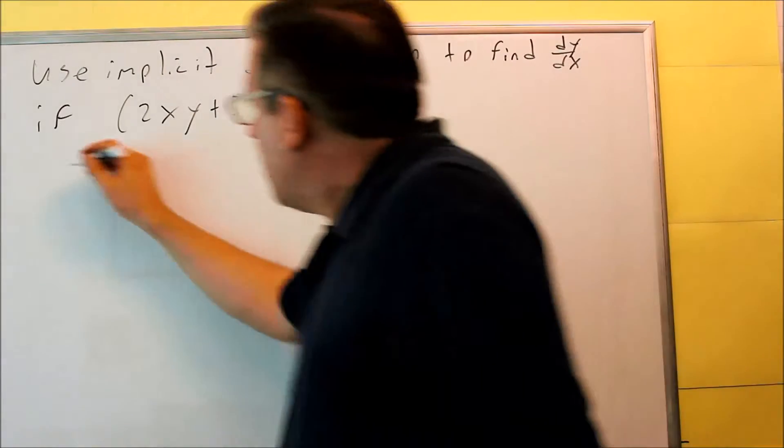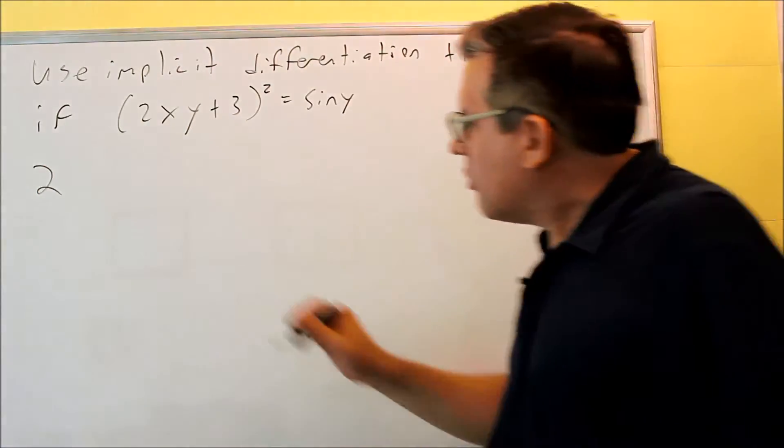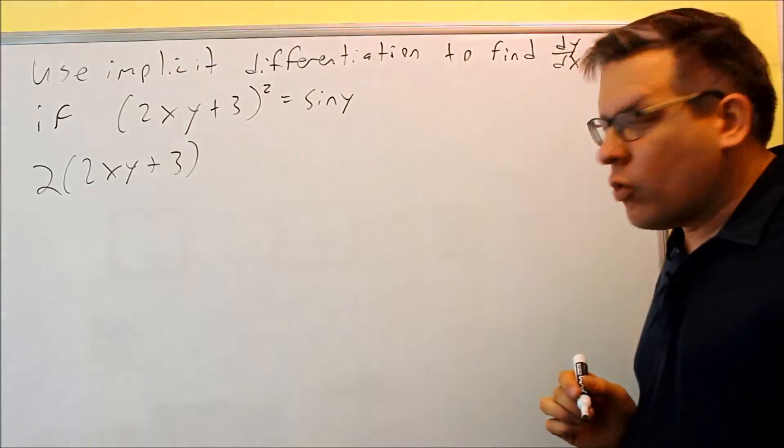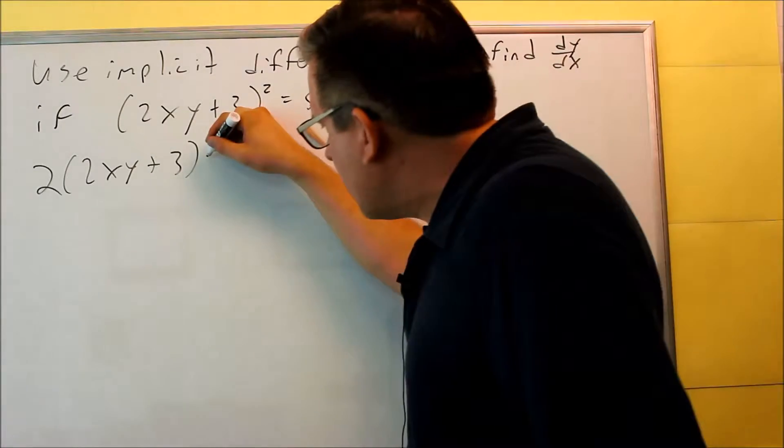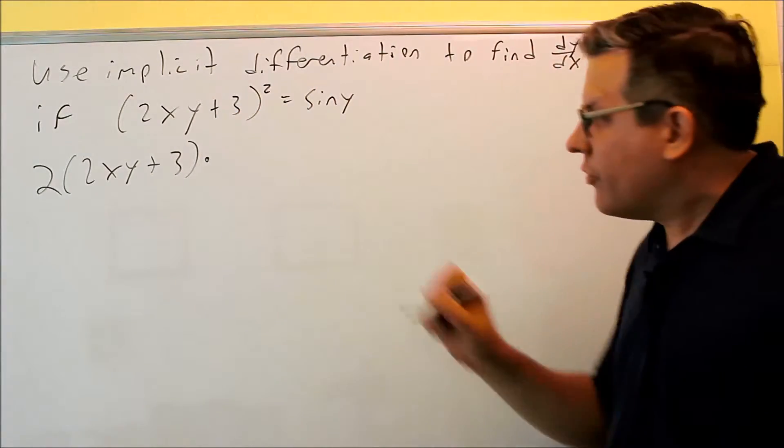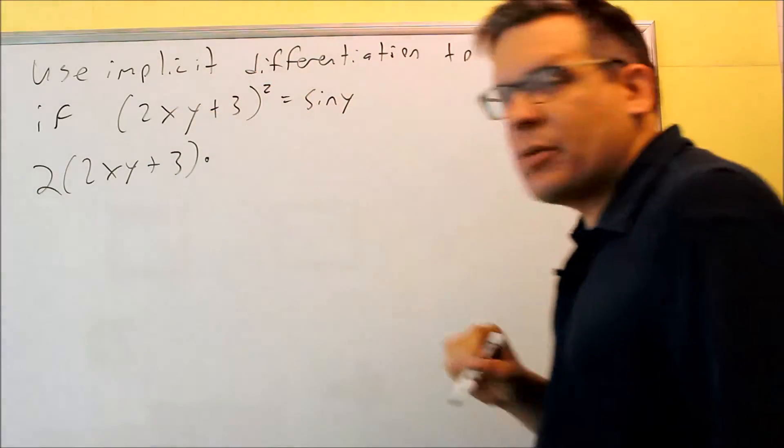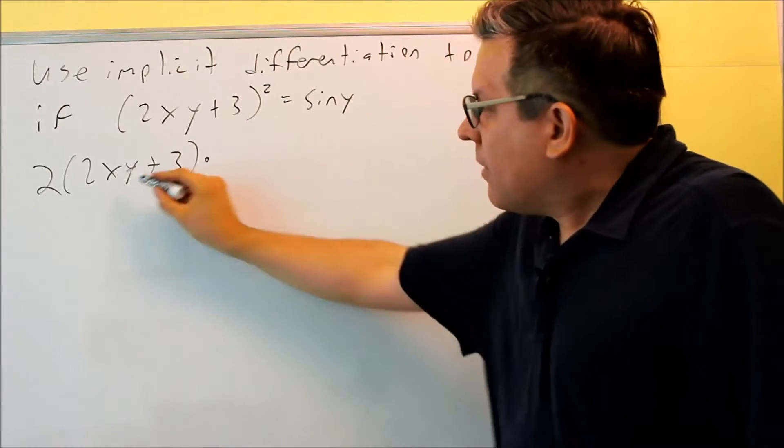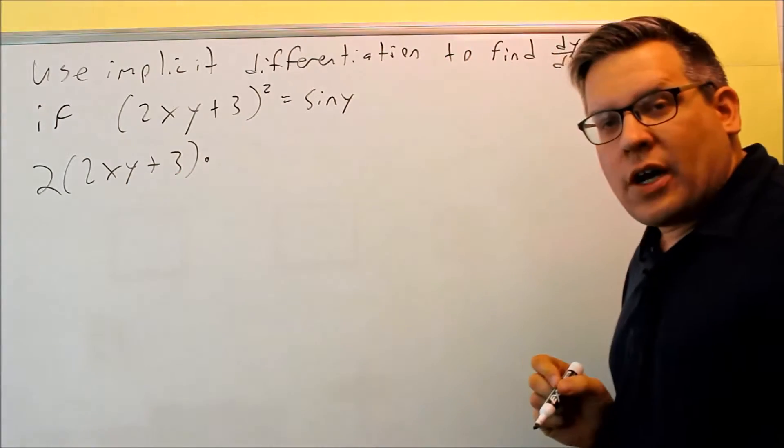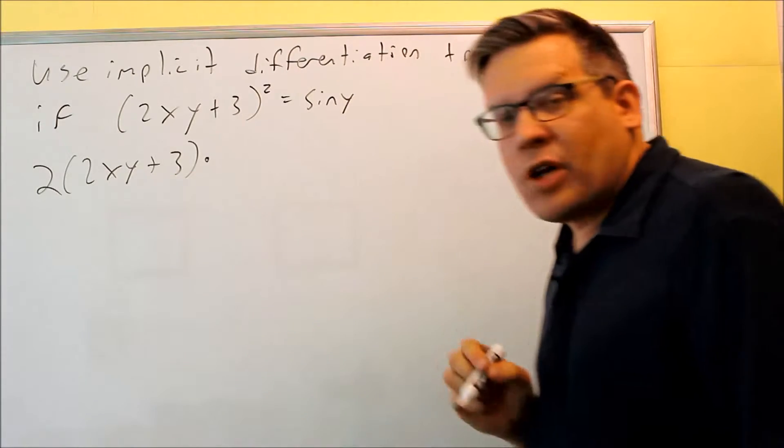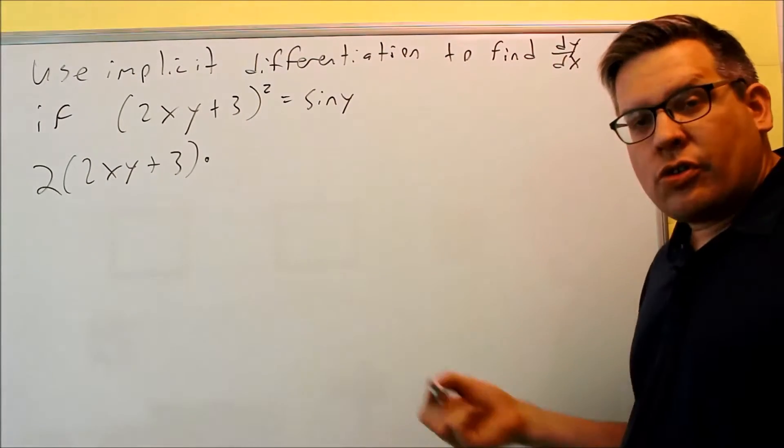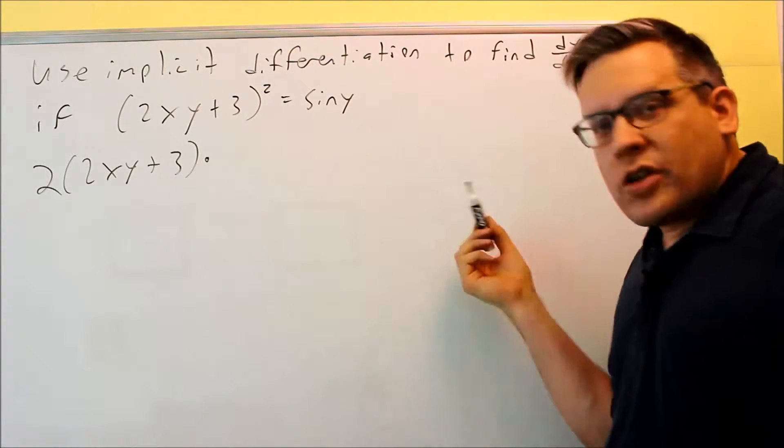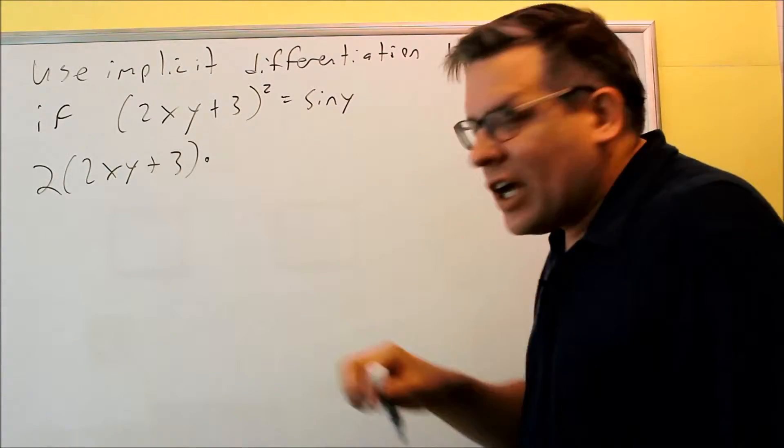Let's first start with the left hand side. We're going to use the power rule, so the 2 is going to come down, we get 2(2xy + 3), subtract 1 from the power and you get a 1 there. But, you have to multiply this by the derivative of what's inside the parentheses. Now if you take a look at what's inside the parentheses, we have two different things multiplied together. We have a 2x multiplied by a y. Now the 3, derivative of 3 is going to go away, so we don't need to worry about that, that's going to be 0.